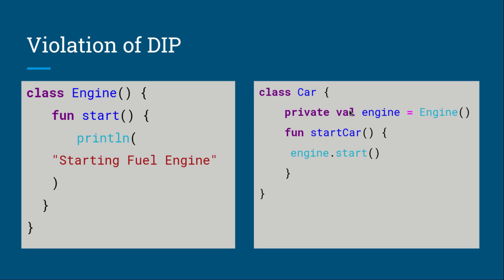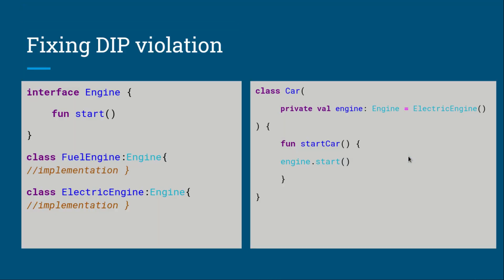What if we want to swap the engine for an electric car? We would have to change the Car class again, creating a mess. The fix is to create an interface that just defines a start engine method. We then create concrete implementations — FuelEngine and ElectricEngine — that implement this interface. We use composition by passing the engine dependency directly into the Car constructor. We pass in the electric engine as the default engine. Now if we want to swap to a different engine — for example, a magnetic engine — we can easily do so without changing the Car class.